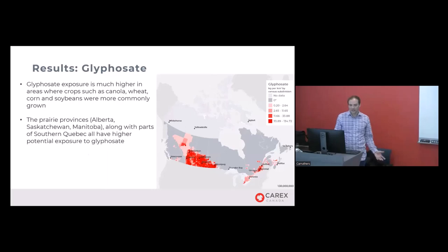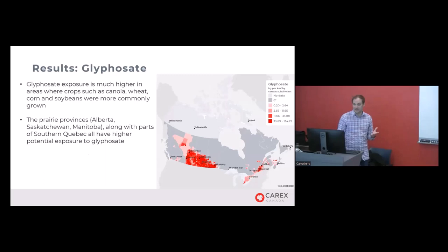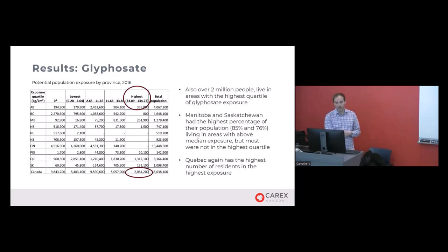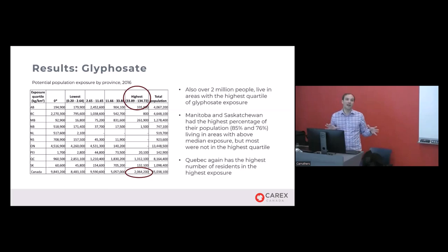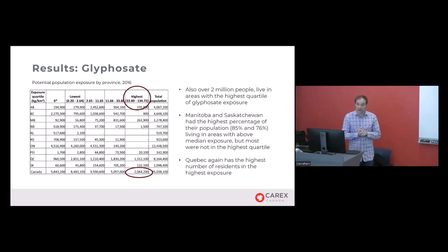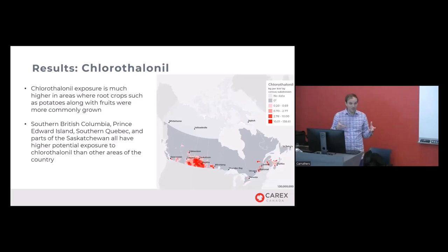Glyphosate results are fairly similar to 2,4-D. Glyphosate is applied heavily to canola, wheat, and corn, so higher exposure appears in the Prairie Provinces and southern Quebec. Again, about two million people are in the high exposure category. Notably, in Manitoba and Saskatchewan, about 85% and 76% of their populations respectively are above the median exposure — mostly in quartile three, but clearly elevated compared to other provinces due to those crops being widely grown there.